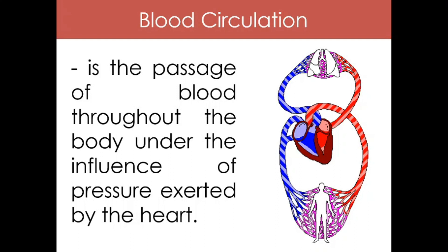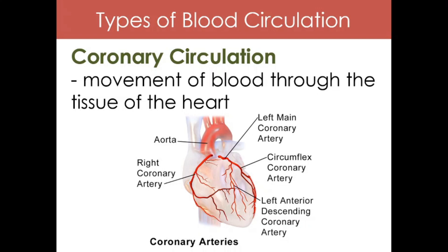We have three types of blood circulation. The first one is coronary circulation. As we all know, the heart pumps blood to the different parts of our body. It also has to provide blood to itself, along with the nutrients and oxygen it needs in order for it to function properly. Hindi lang yung ibang parts ng katawan ang dinadaluyan ng dugo — ang ating puso ay kailangan din ng dugo at ng mga sustansya. So coronary circulation is the movement of blood through the tissue of the heart — yung pagdaloy ng dugo sa mga ugat na matatagpuan sa ating puso.